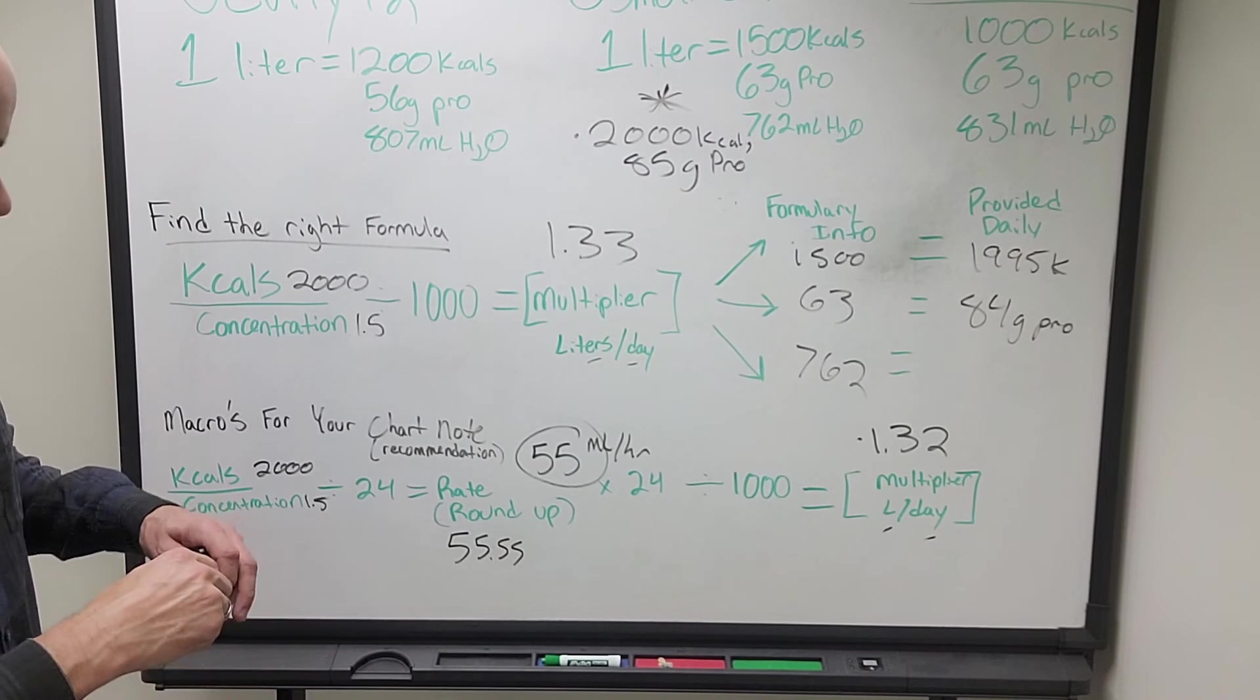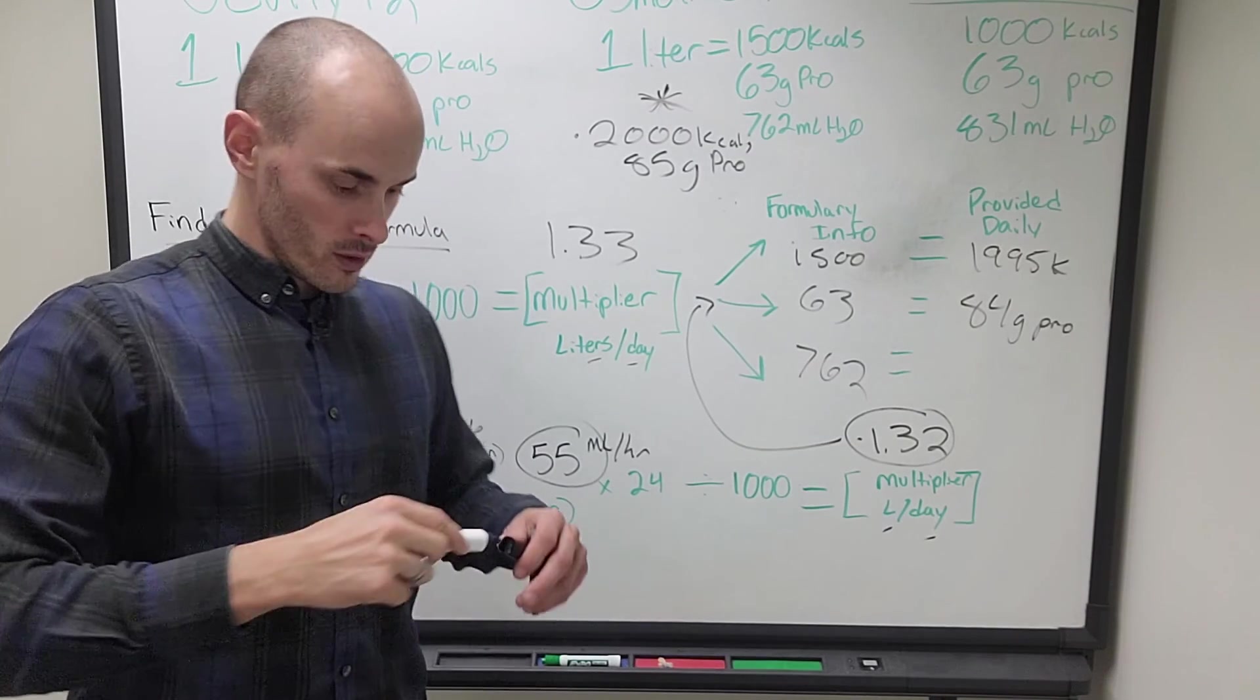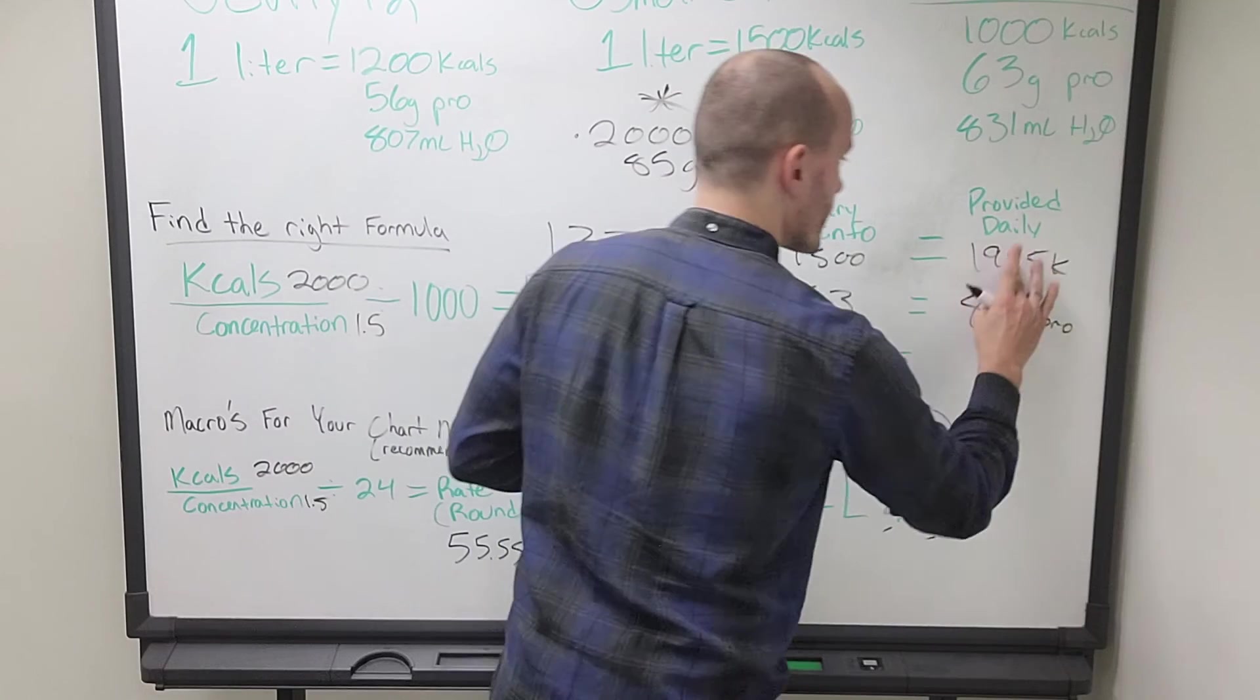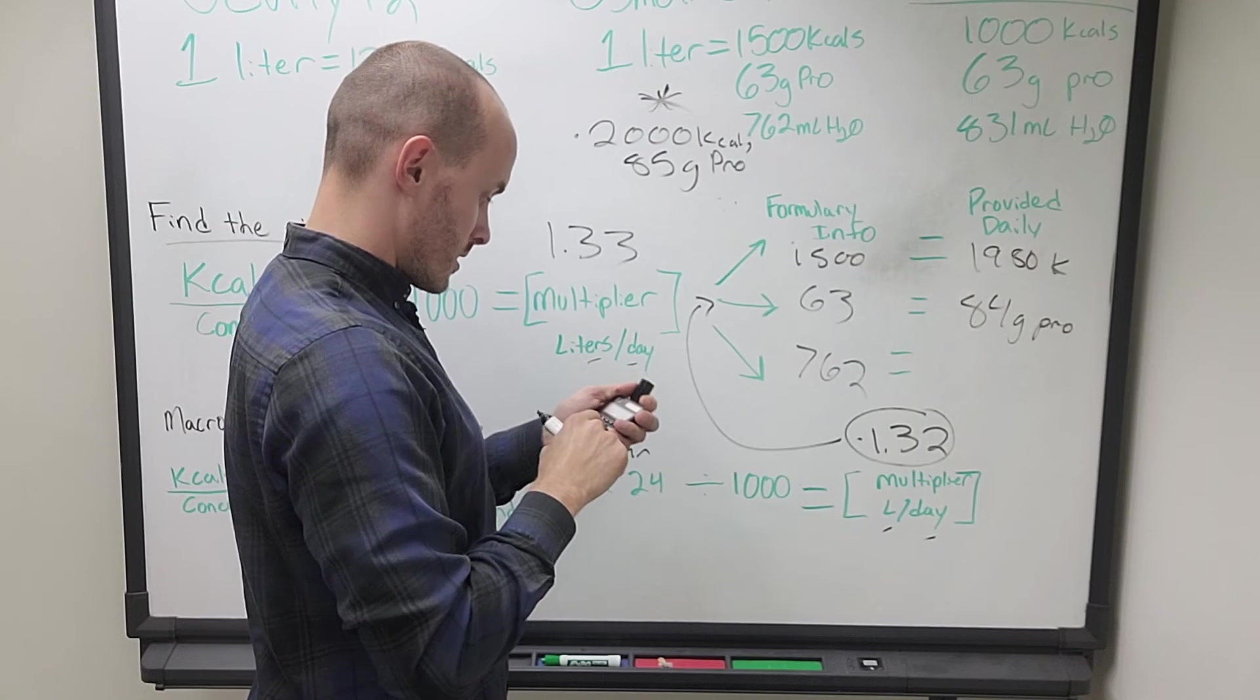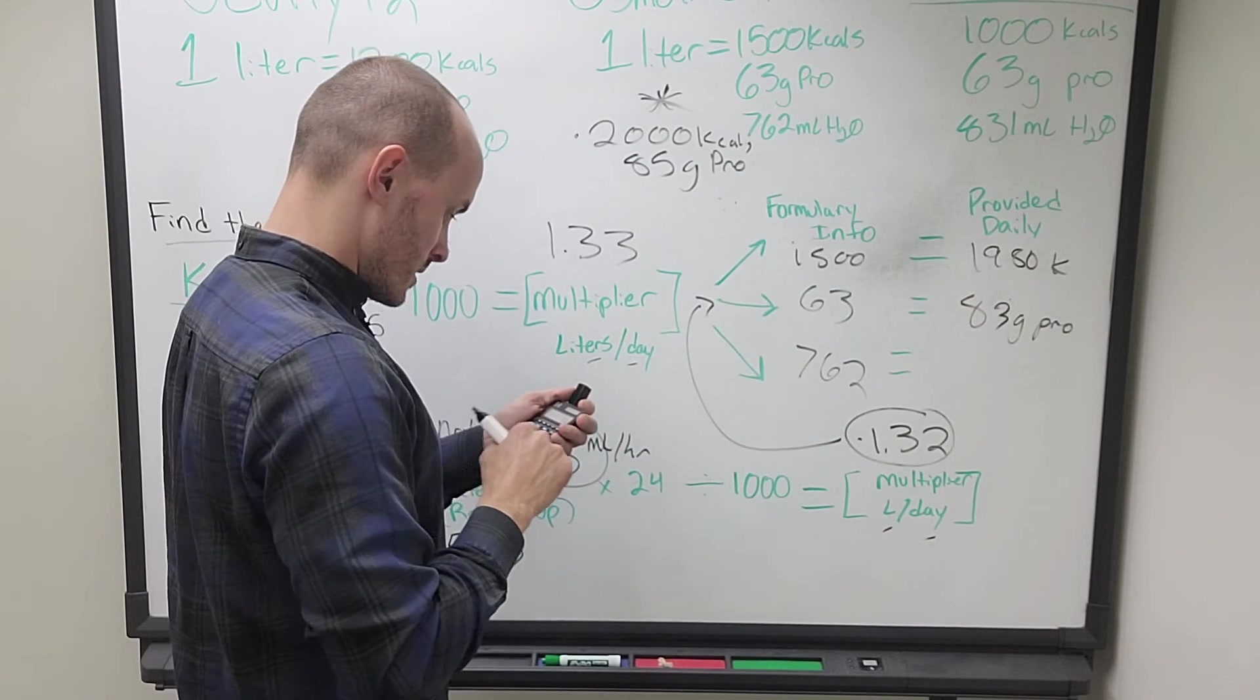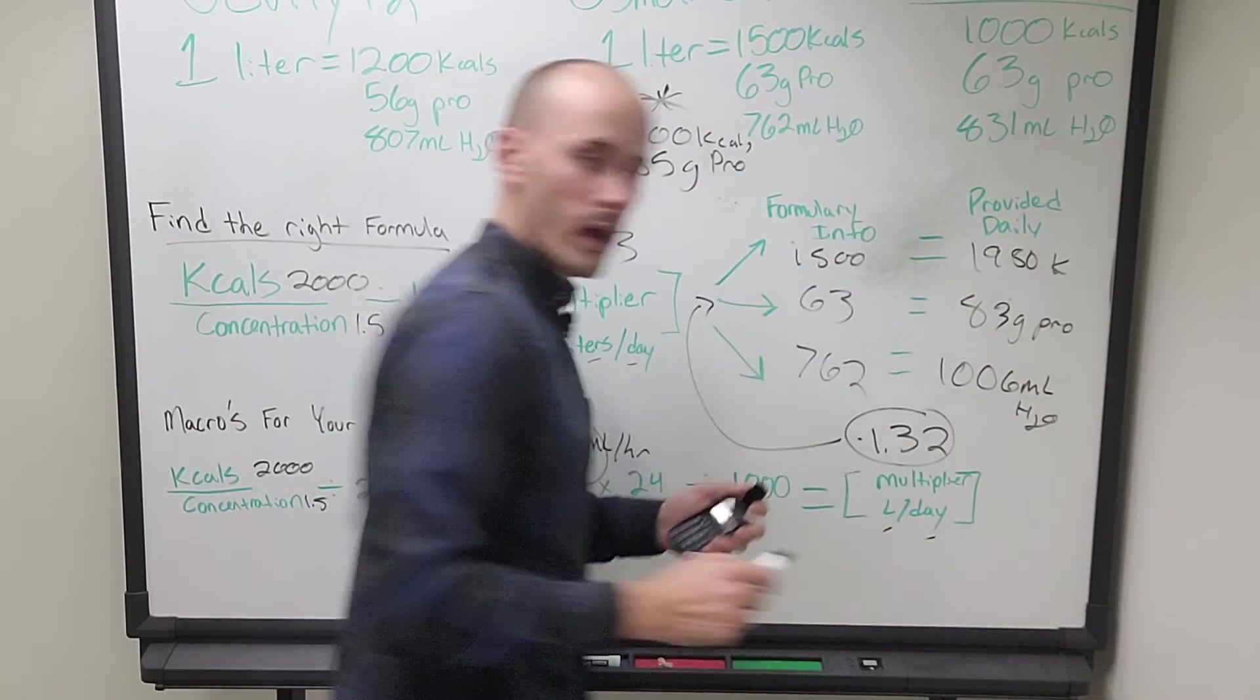This is how many liters per day the patient will receive getting osmolite 1.5 at 55 milliliters per hour. So then what we can do is we can run this number back through here and that will give us, let's just do this for fun, 1,500, 1980 calories, 1980 calories, 63 times 1.32 gives us 83 grams of protein. And last but not least, our 762 is a thousand six milliliters of H2O. Awesome.